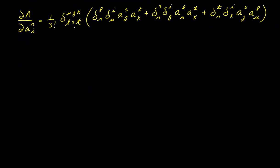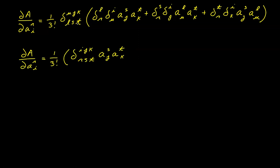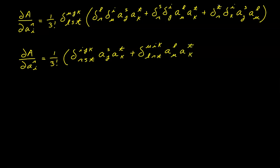Next, we'll distribute the delta factor to each of these three terms. When we do it to the first term, notice that there's going to be some indexes that are absorbed. The L index right here is absorbed, leaving us with R in this position. The U index is going to be absorbed, leaving us with I right here. When we distribute to the second term, the S index is going to be absorbed leaving us with R, and the J index is going to be absorbed leaving us with I. When we distribute to the third term, the T index is going to be absorbed leaving us with R, and the K index is going to be absorbed leaving us with I.